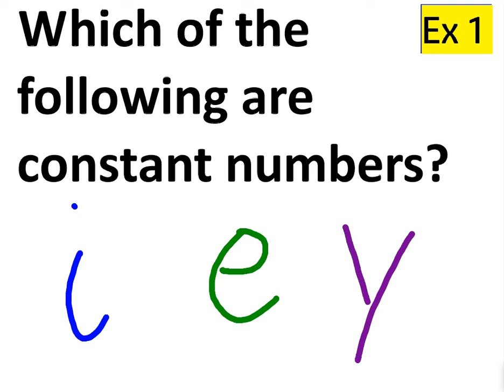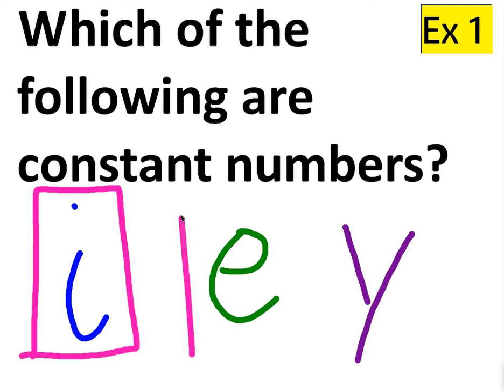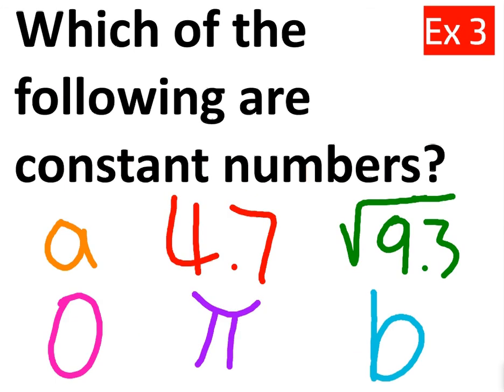Which of the following are constant numbers? Now we're getting into what I was talking about. You need to identify, even though there are letters, they are constant. Remember, i is equal to square root of negative 1. E is equal to 2.718 and the number goes on forever. Y, however, is a variable. So we're not going to square that one off. A variable is a number that changes, and we'll talk about that in the next lesson.